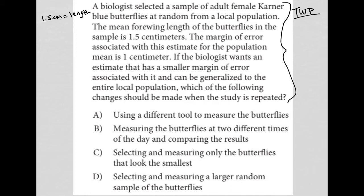The next sentence says the margin of error associated with this estimate for the population mean is one centimeter. So let me say, in fact, mean or average length, and then the margin of error. So plus or minus one cm is the margin of error.